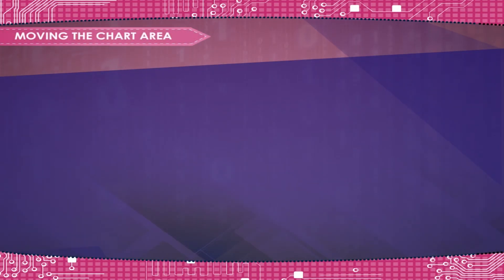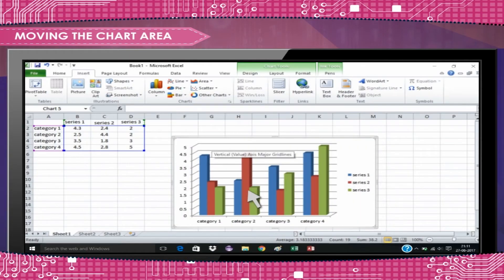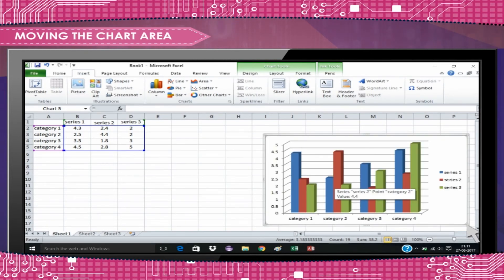Moving the chart area: Select the border of the chart area. Hold down the left mouse button and drag the chart area to a new location.